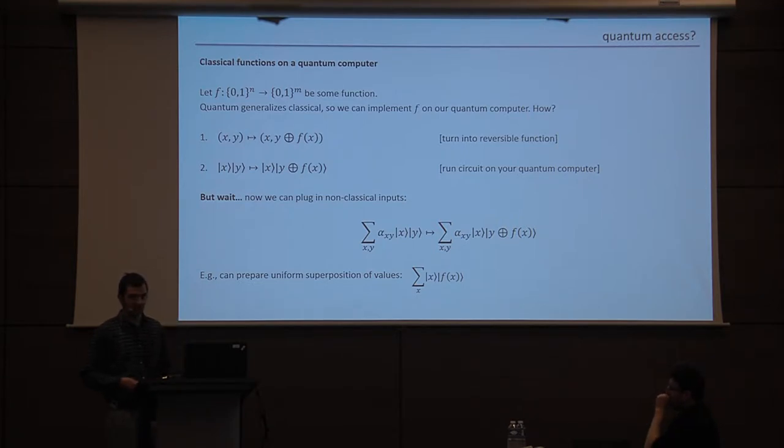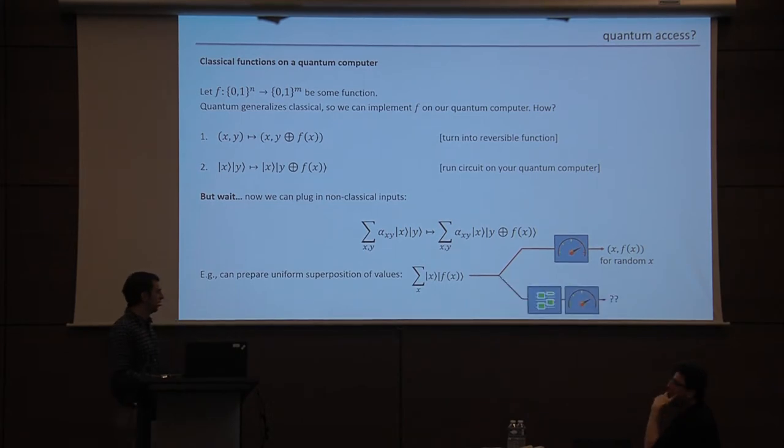So for example, one natural thing you might want to try is prepare a uniform superposition over the output register and then plug that into the oracle and the outcome will be a uniform superposition of input-output pairs of the function. And once you have that kind of state prepared using the oracle, you could try different things. You could measure this state. Unfortunately, that's not so useful because in that case you will just get a random input-output pair and you can do that classically. But as it turns out, if you run some interesting quantum circuit, like the quantum Fourier transform, whatever that is, and then you measure, then we know that in fact for some functions we can actually compute certain things that we cannot do with classical access.